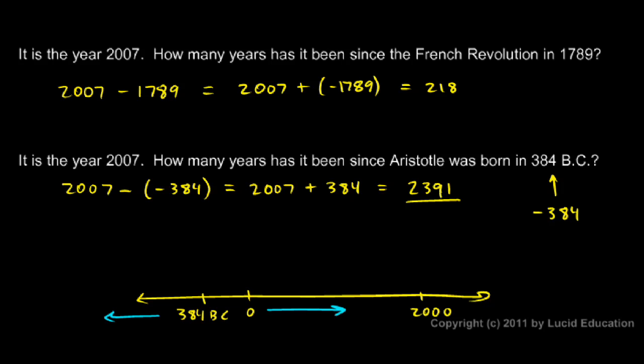2391 years since Aristotle was born. Or from his date of birth to the year 2007.